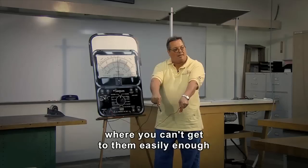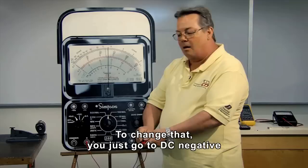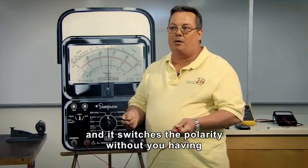Well we set up our meter to read a DC value with DC positive. But let's say your leads are tucked down low where you can't get to them easily enough and you realize that your polarity is wrong. To change that you just go to DC negative and it switches the polarity without you having to change the leads.